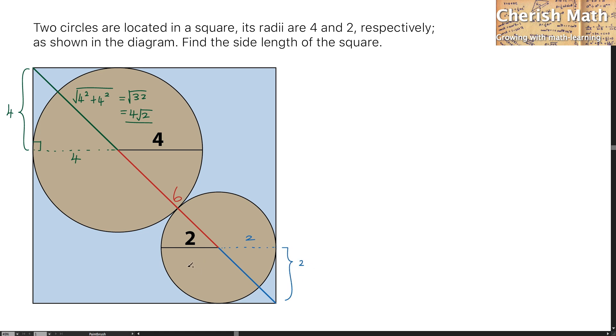I use the square root of 2 squared plus 2 squared, and that produces 2 times the square root of 2.